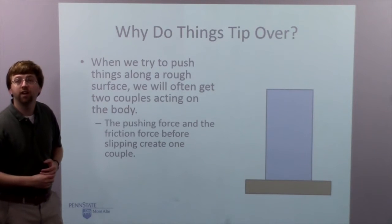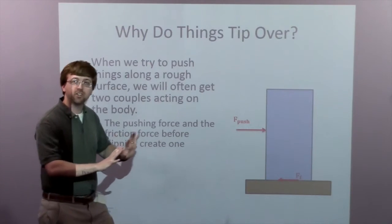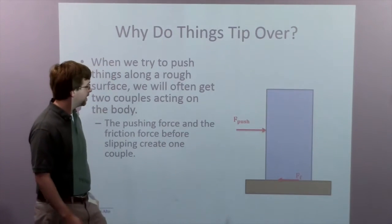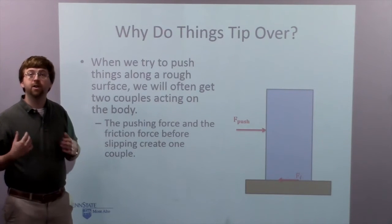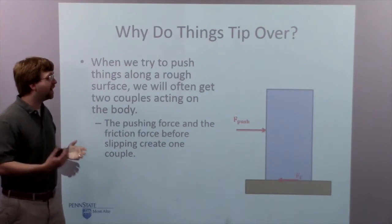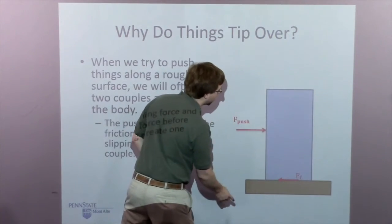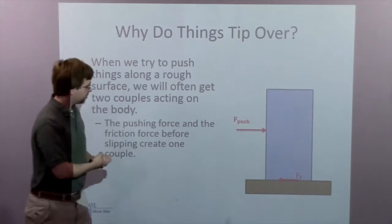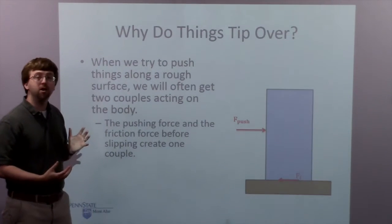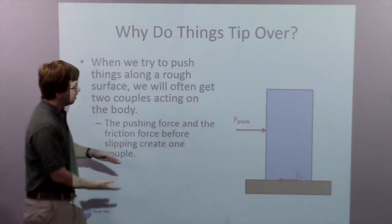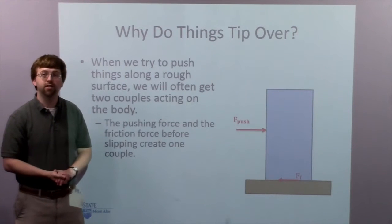So that first set of couples is going to be the pushing force. When you're pushing, imagine I'm pushing somewhere in the middle of the fridge — that's going to have some height. But the friction force itself is exerted at the surface. So the friction force is down here at the contact point between the fridge and the ground. Since these, if I don't have any motion, have to be equal and opposite, but they've got some distance or separation, they're going to exert a moment on this fridge.